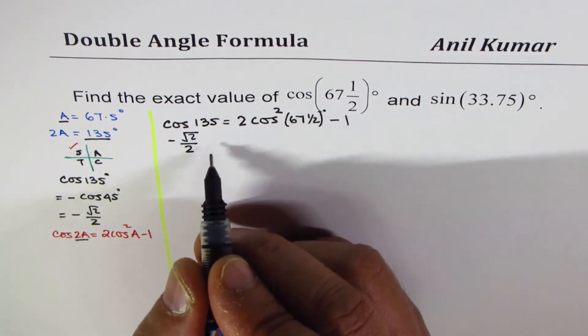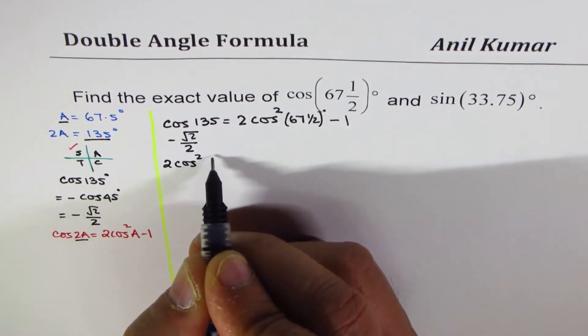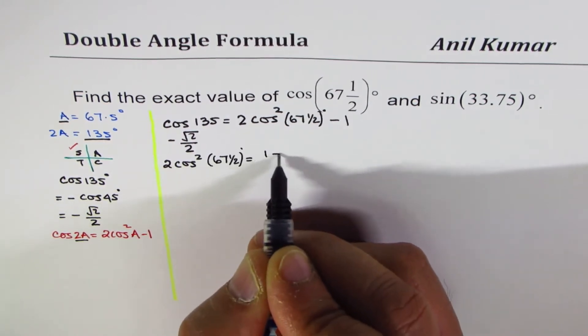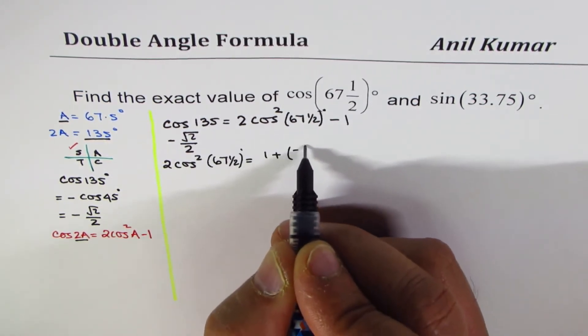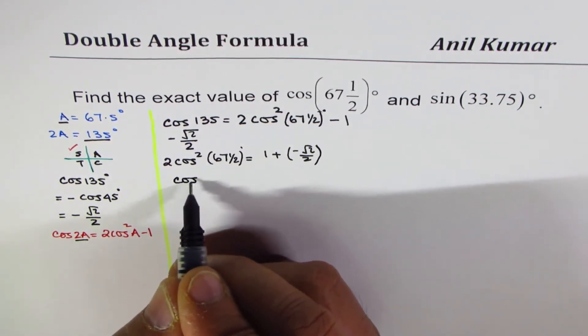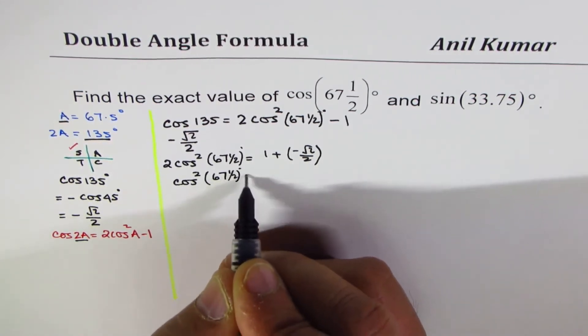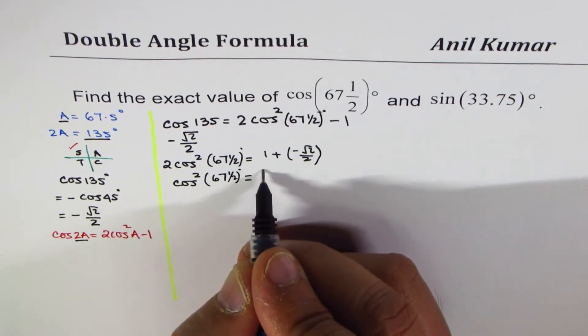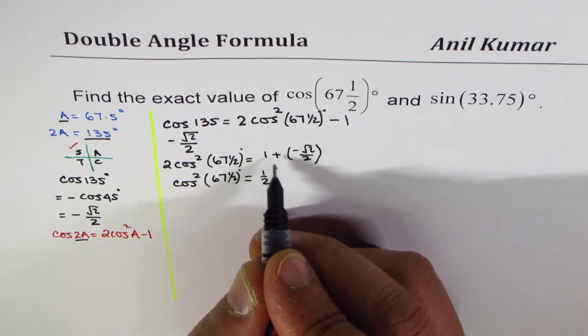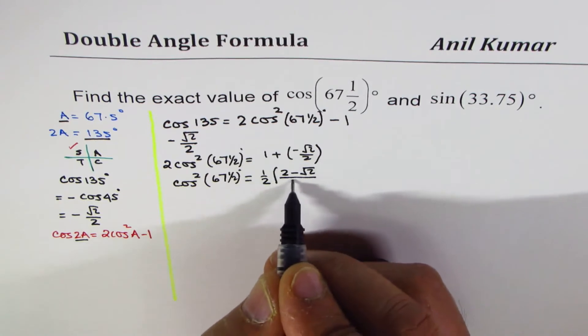Now we can rearrange this, so we can see 2 cos square 67.5 degree is equal to 1 plus minus square root 2 over 2. Or we can say cos square 67.5 degree is equal to half of this, which is, let's take common denominator, we get 2 minus square root 2 divided by 2.